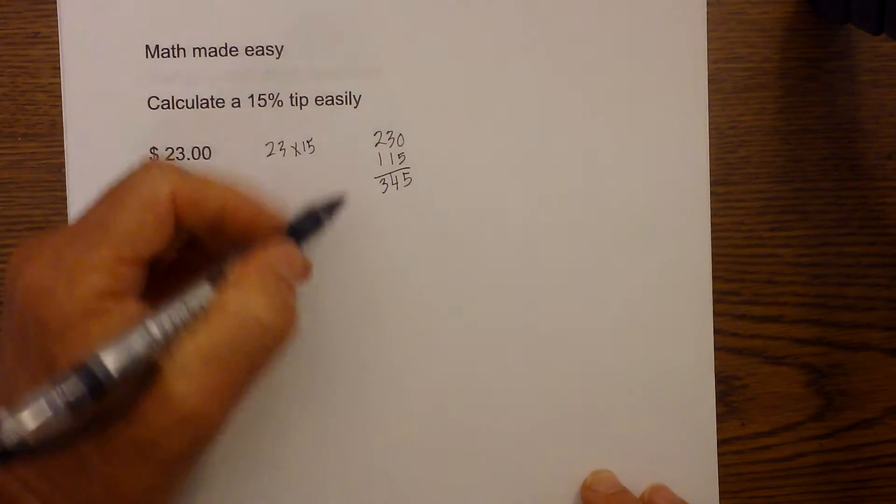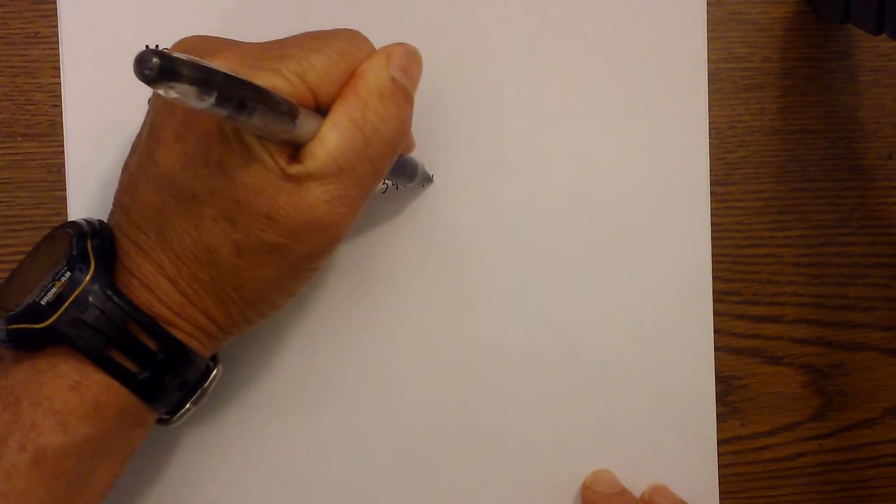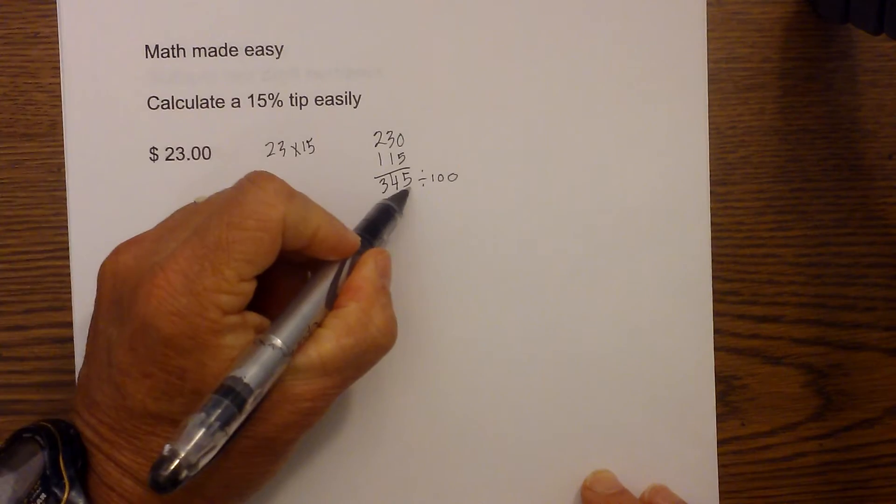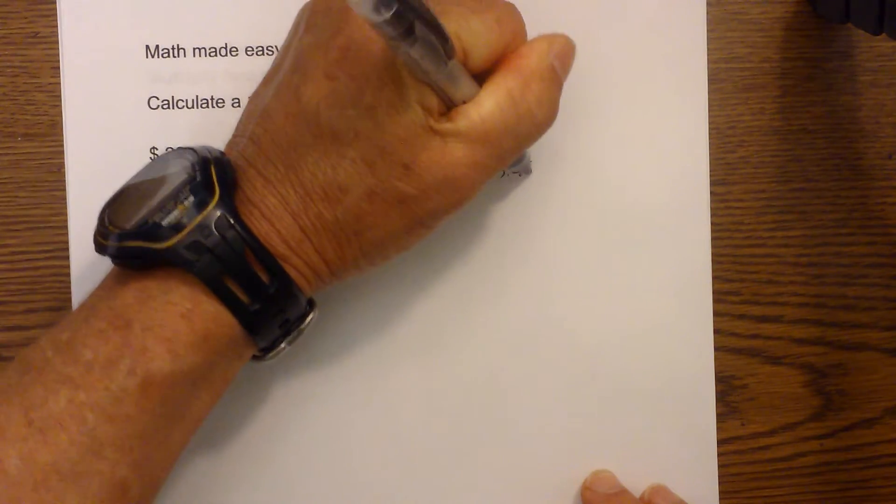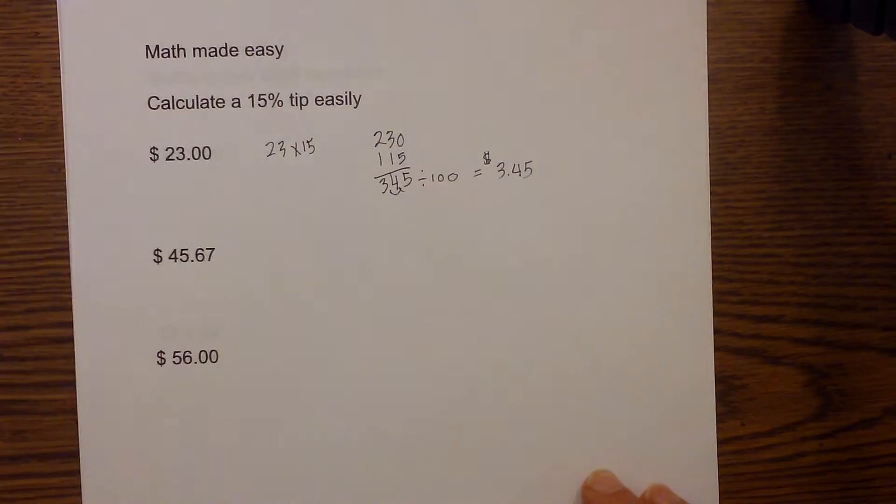Then to get the percentage, all you do is divide by 100 and that is very easy. All you do is move the decimal two places to the left so that becomes 3.45. So your tip, a 15% tip, would be $3.45.